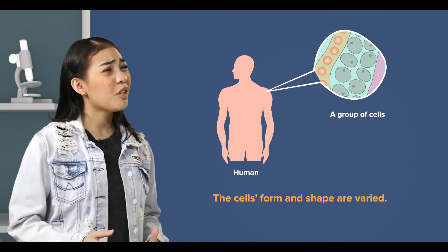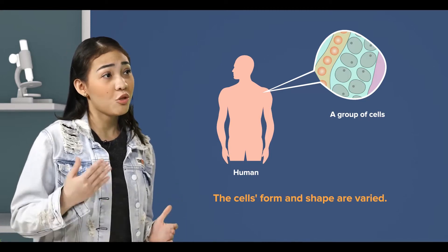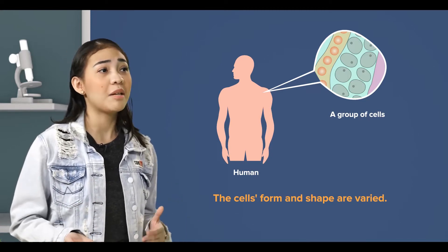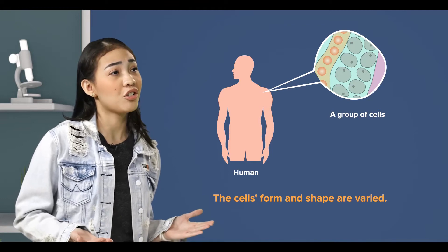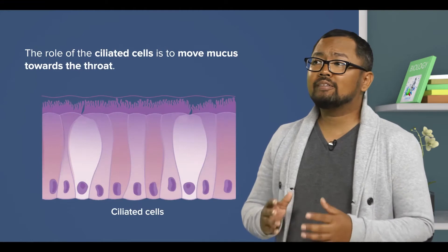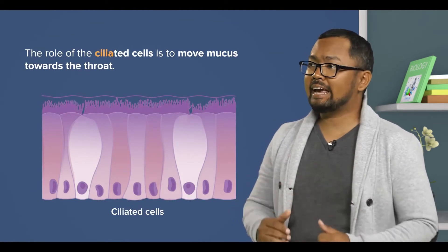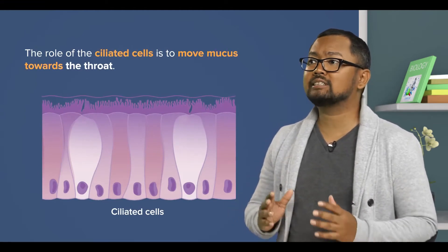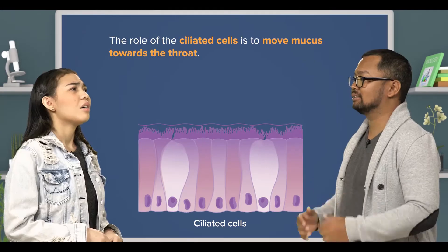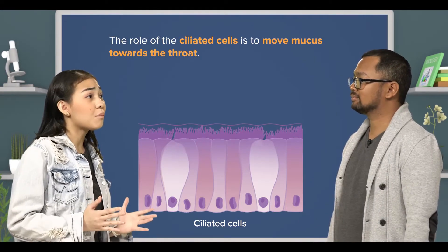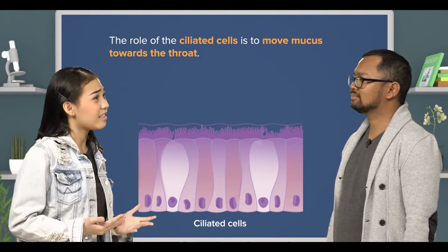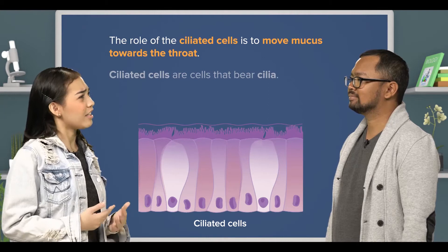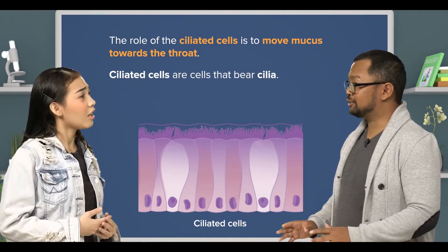So, there will be a relationship between the structure and the particular function of the cell, right? Yes. For instance, the role of the ciliated cell is to move mucus towards the throat. So, the cilia cells move mucus. Tell me more about this cell, teacher. Sure.